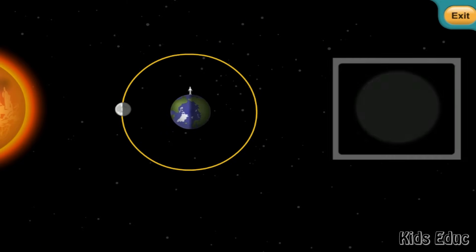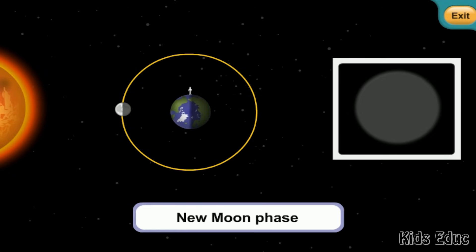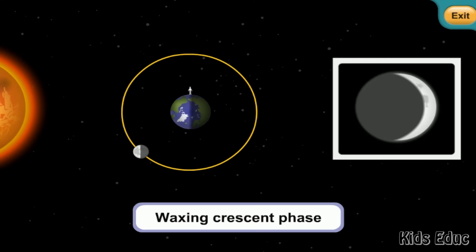The lunar cycle begins with the new moon phase, when the moon is not visible from the earth. This is because the half of the moon that faces away from the earth is lit, and we only see the dark half. During the waxing crescent phase, we begin to see a very small part of the moon lit by the sun, but most of it is still shadowed.